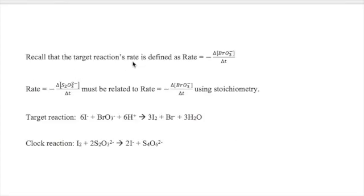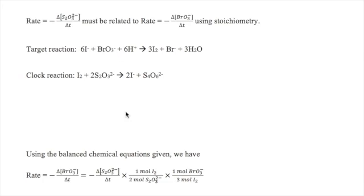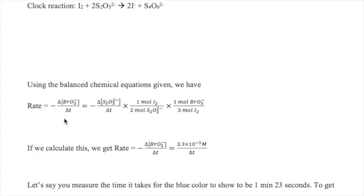However, remember that the reaction's rate is defined with respect to bromate and not thiosulfate. So what we must do is relate the rate with respect to thiosulfate and bring it to the rate with respect to bromate. We can do this through stoichiometry of the species in the target and the clock reactions as shown below. Now, how do we do this? Well, since every iodine requires 2 thiosulfate and every bromate requires 3 iodine, the rate with respect to bromate is 1/6th the rate with respect to thiosulfate.